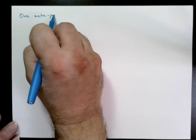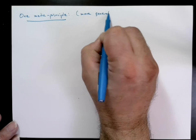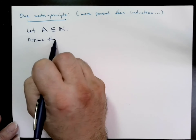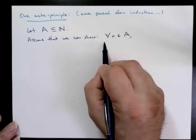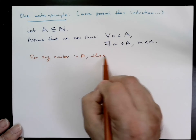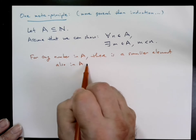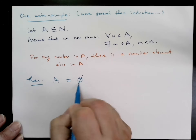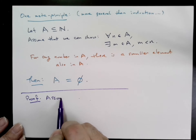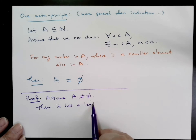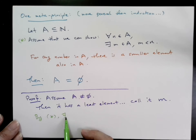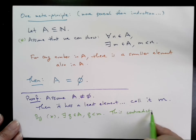There's an interesting meta-principle that applies here, more general than induction. Let A be any subset of the natural numbers, and assume that for any n in A there exists an m in A where m is less than n. Said in words: whenever we can get an element of A, we can always find a smaller element also in A. If this is true, then A must be empty. To prove this, assume A is not empty by way of contradiction — then it has a least element, call it m. But by the assumption, there exists a q in A where q is less than m, contradicting m being the least element. So our assumption was false, and A must be empty.